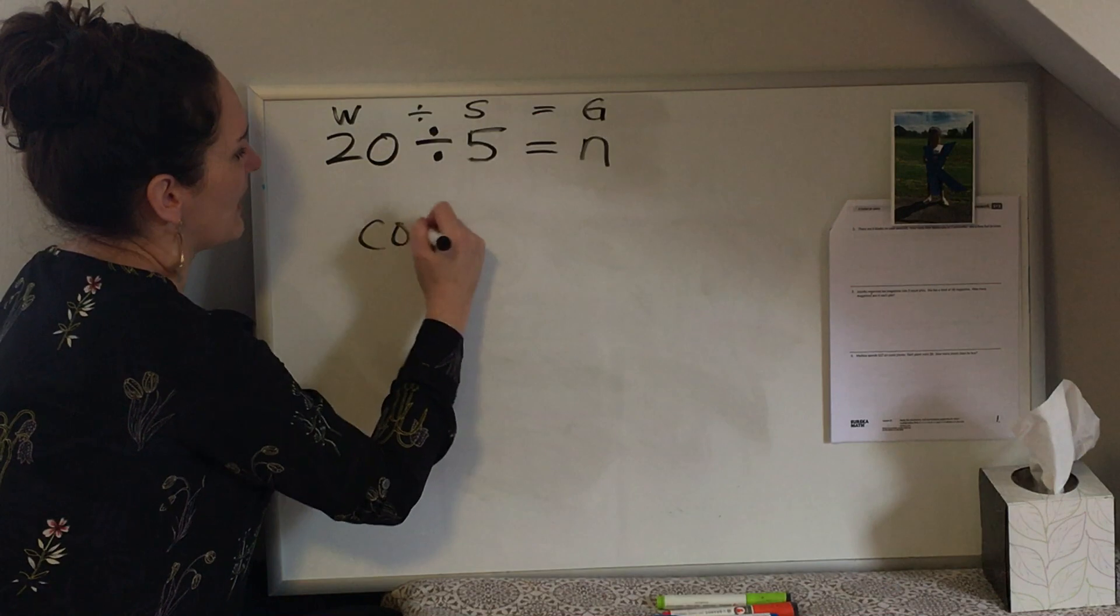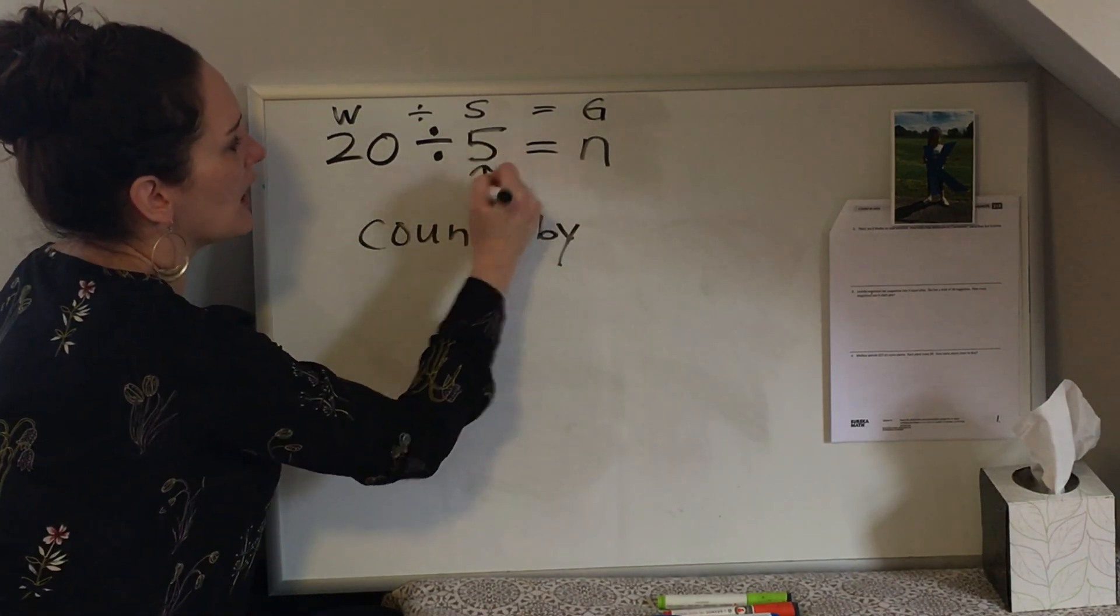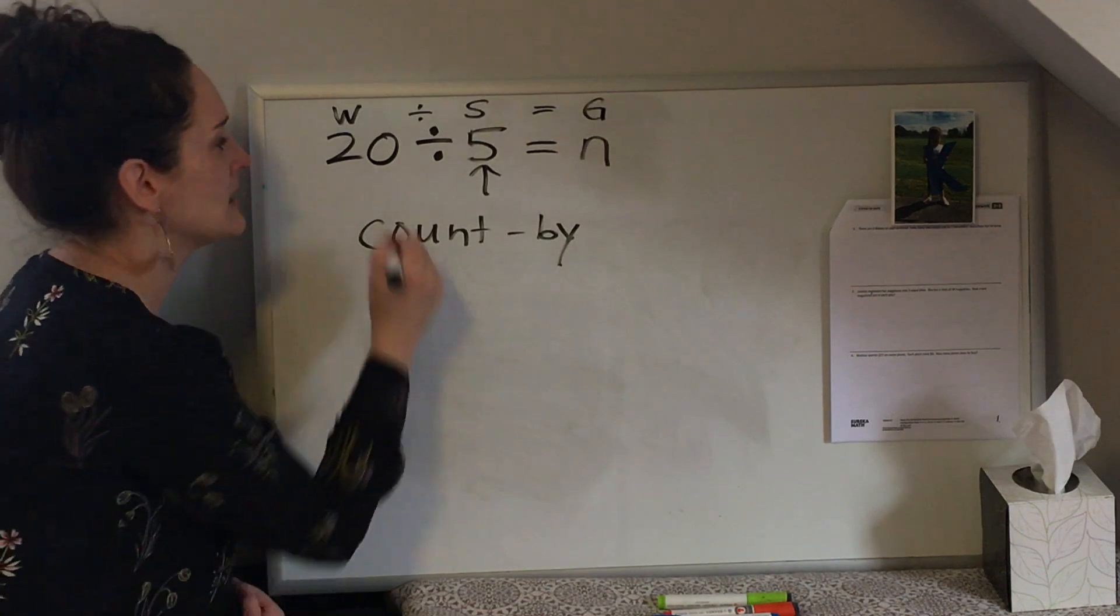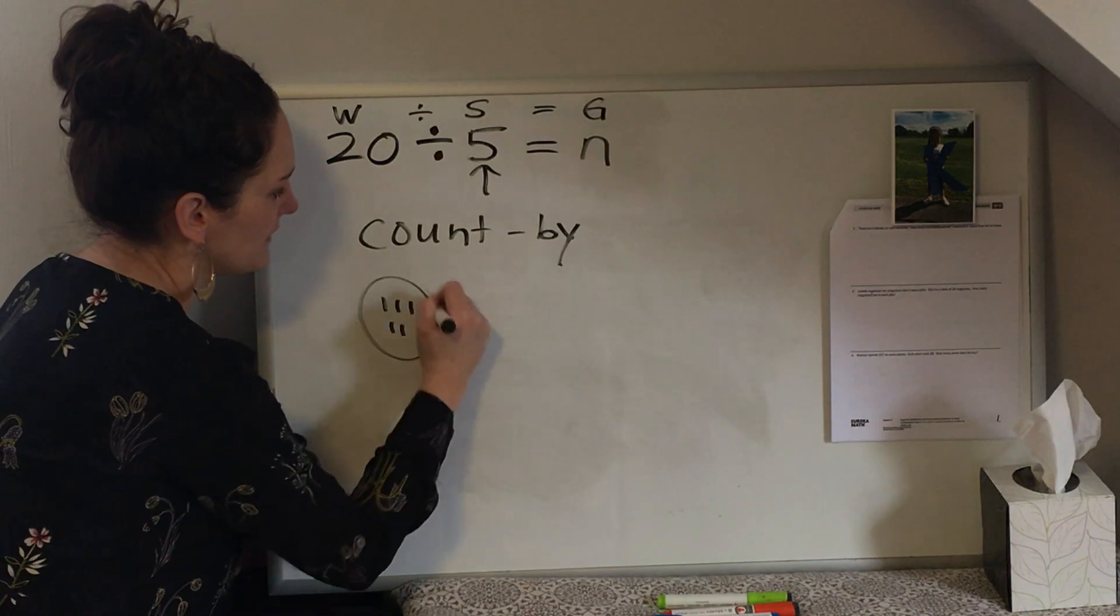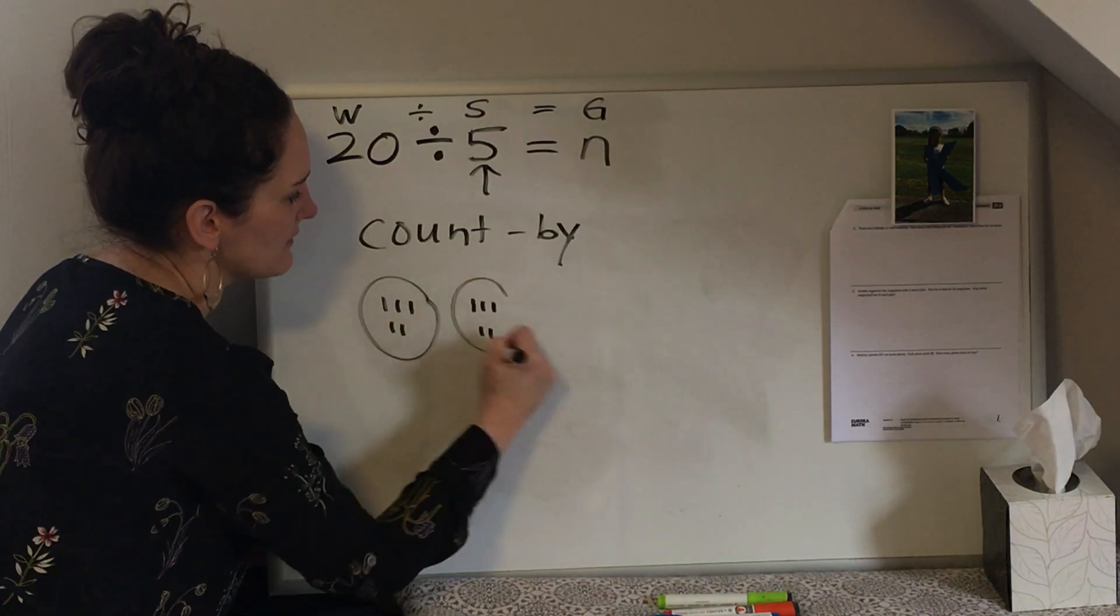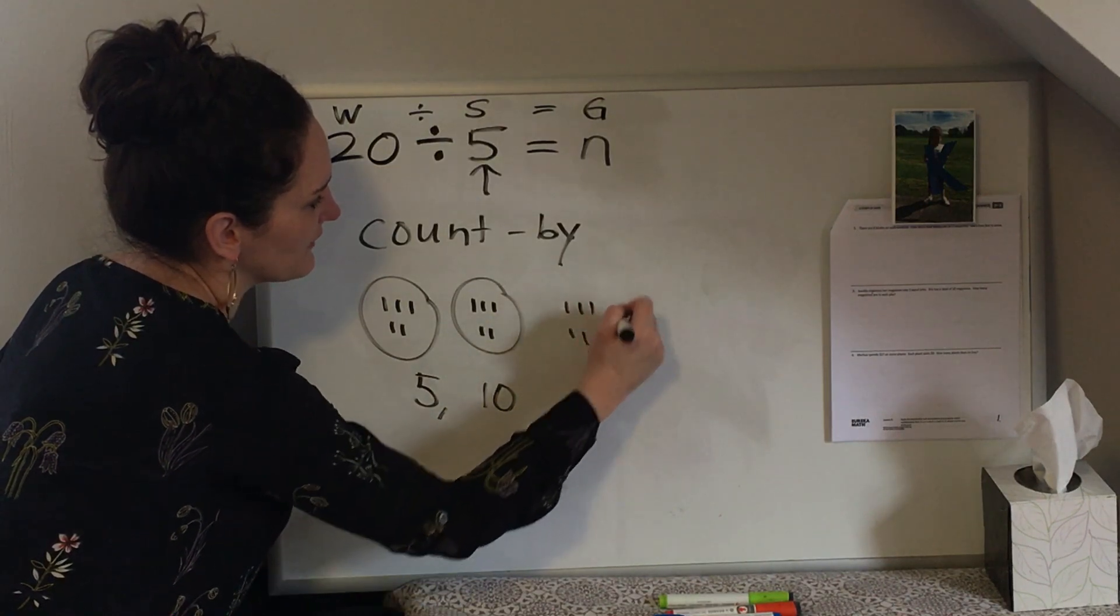The way that we do a count by is you take the number you already know and you count up by that number until you get to your whole. So it looks like this. 1, 2, 3, 4, 5. 1, 2, 3, 4, 5. So we're at 5, 10. 1, 2, 3, 4, 5.